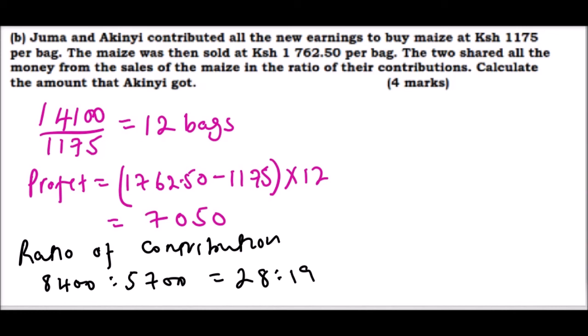This means that Akinyi's profit is 19 divided by 47, that's the total of 28 and 19 which is 47, and you multiply by the profit they got which is 7050. This would give you when you work with your calculator 2850.